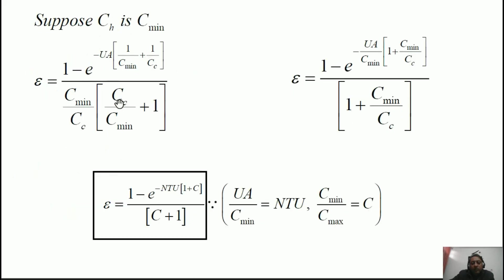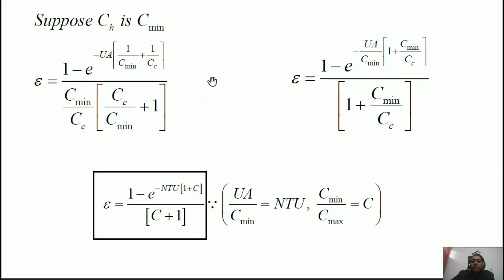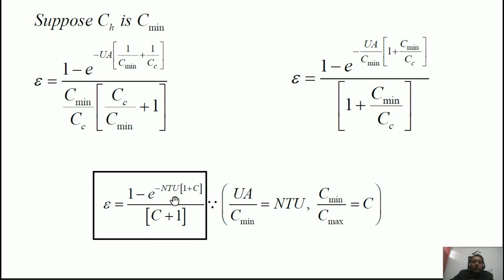The same result is obtained whether C_H or C_C is taken as C_min — you can verify the C_C case as an exercise. The final effectiveness formula for a parallel flow heat exchanger is: epsilon equals (1 minus e^[minus NTU·(1 plus C)]) / (1 plus C), where NTU equals U·A/C_min is the Number of Transfer Units and C equals C_min/C_max. Once you know the effectiveness, you can find the exit temperatures. The same derivation approach can be applied to a counter flow heat exchanger as well. Thank you.